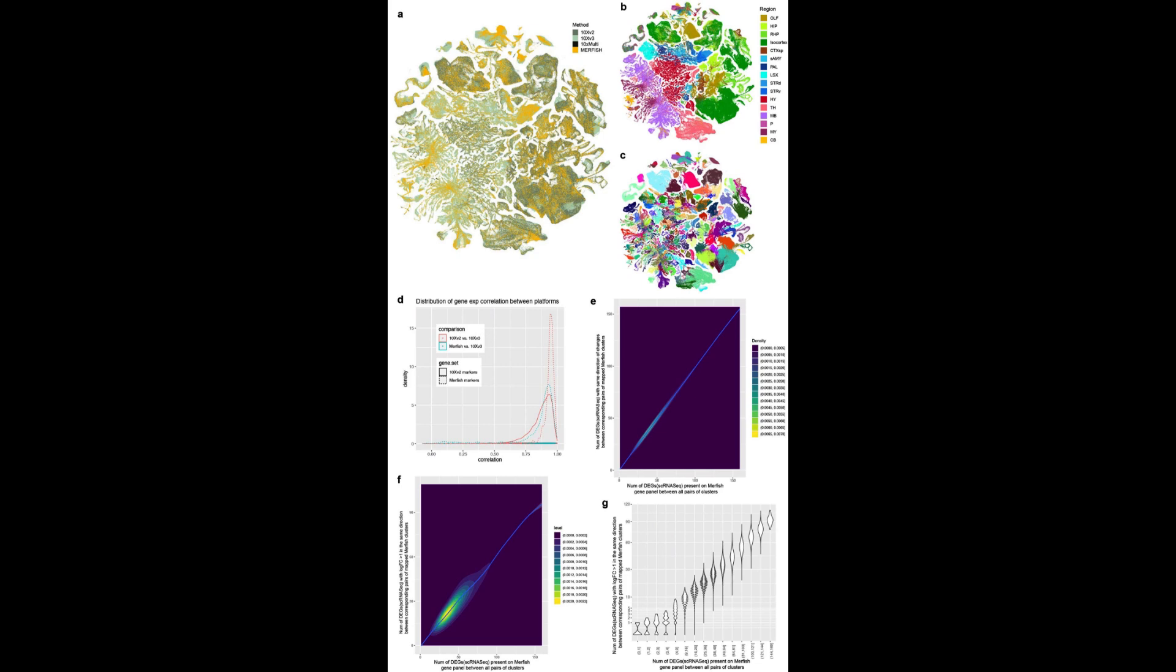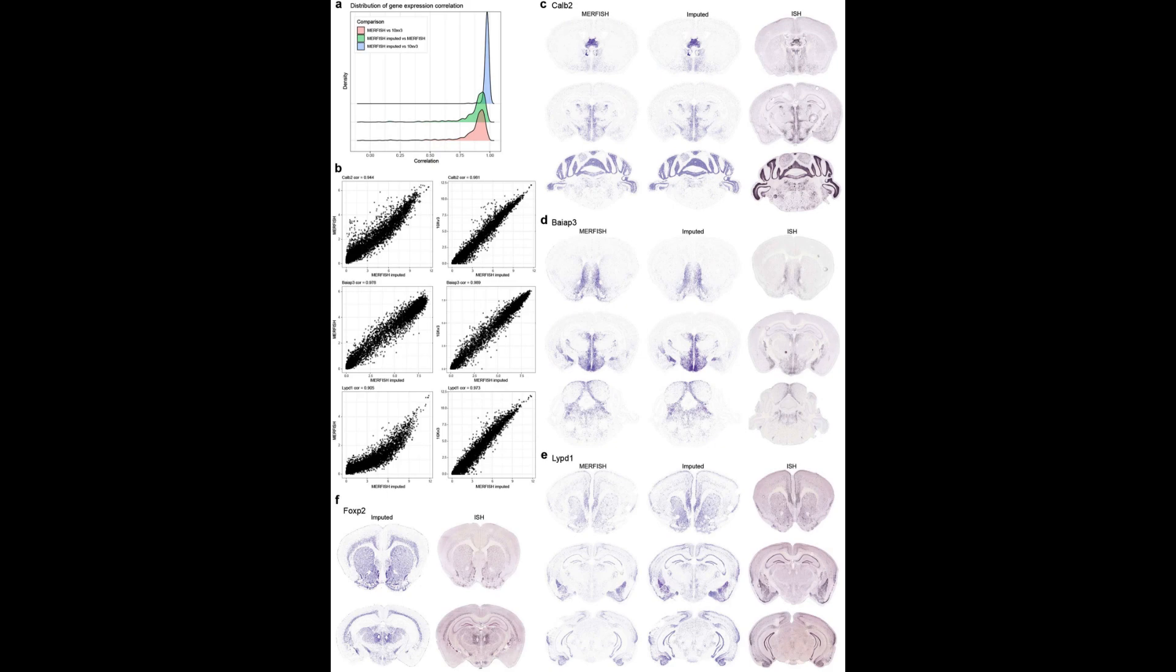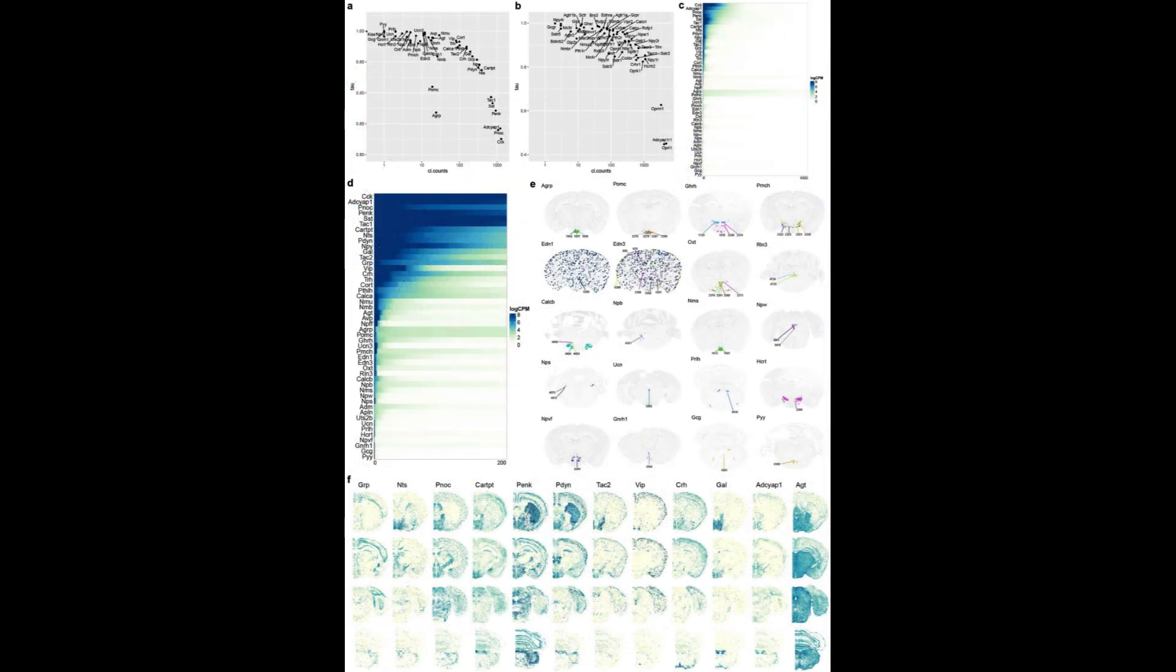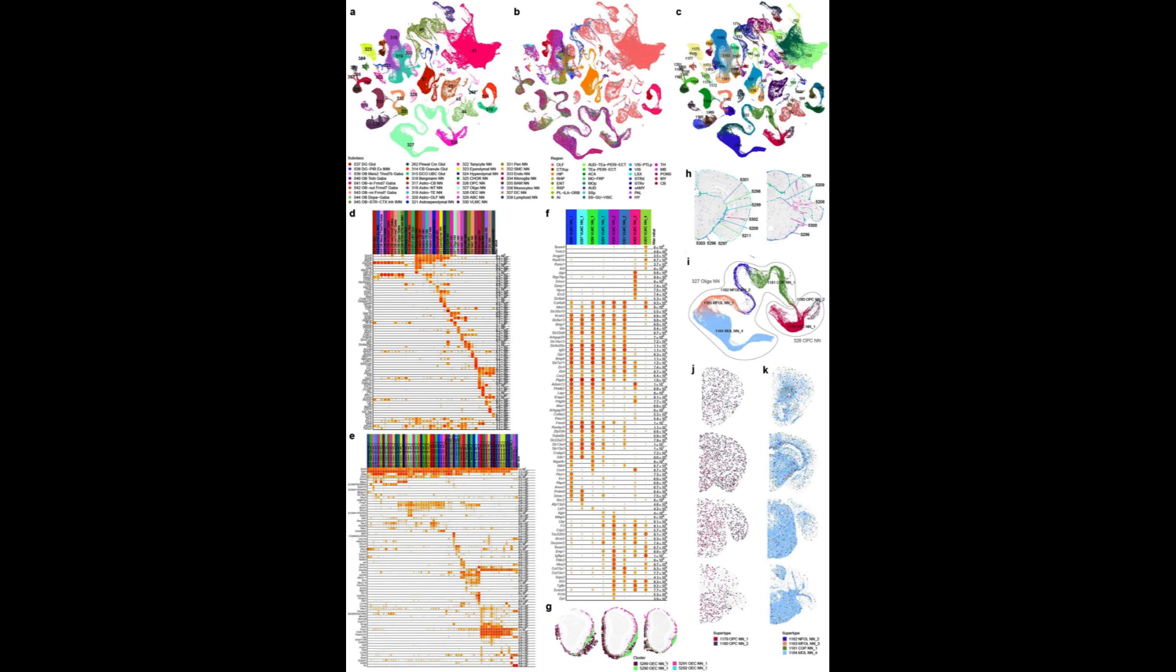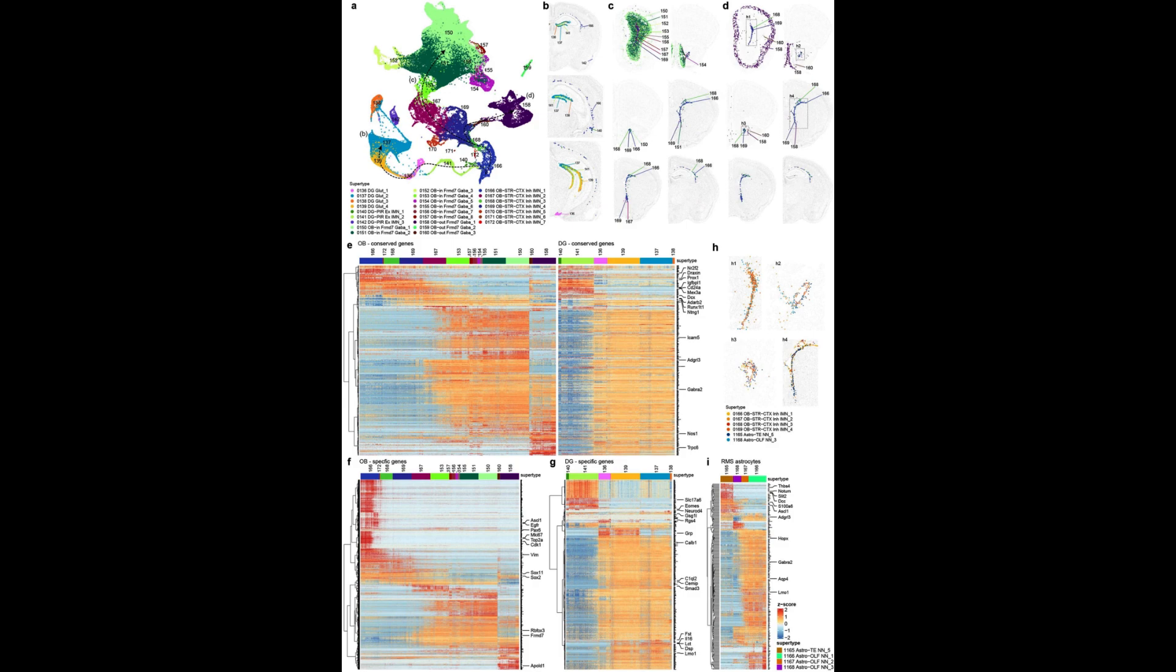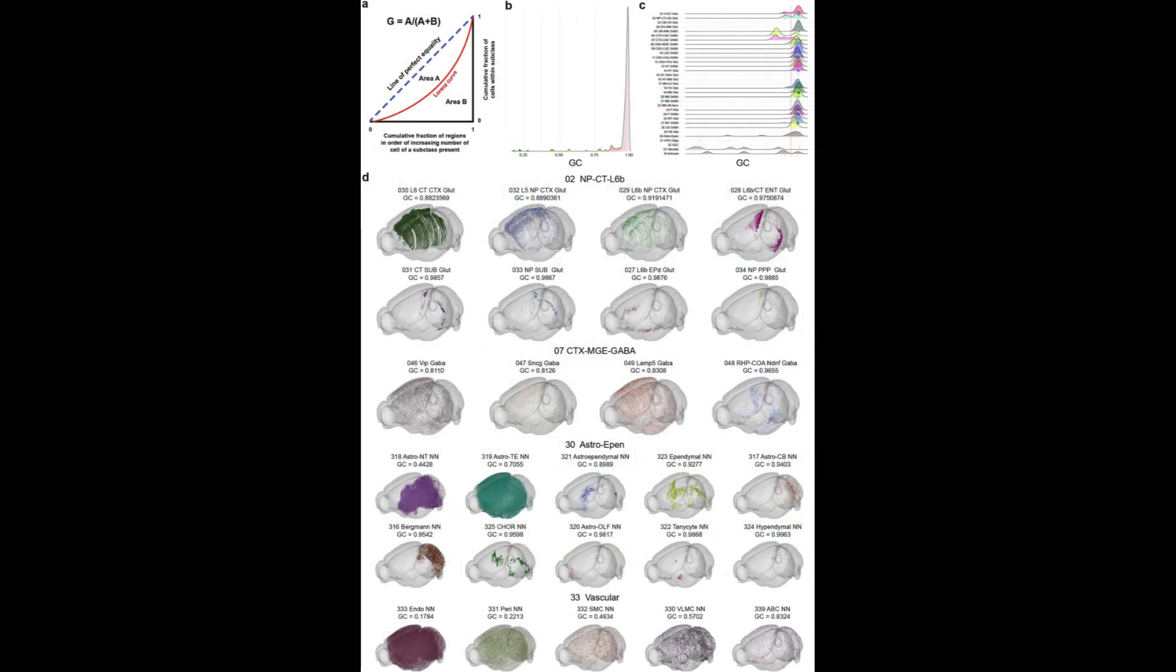This intricate map, specifically designed for the mouse brain, encompasses over 32 million cells and offers detailed insights into their type, location and molecular composition. Furthermore, it provides valuable information regarding the connections between these cells. Given that mice are widely utilized as a primary model for neuroscience research, this cellular blueprint holds immense potential for unraveling the complexities of the human brain, often regarded as the most advanced computer known to mankind.